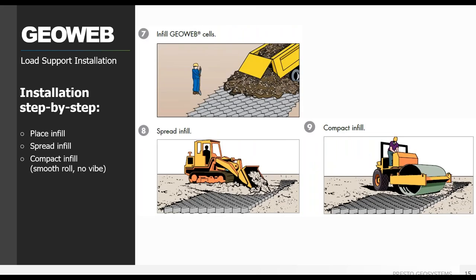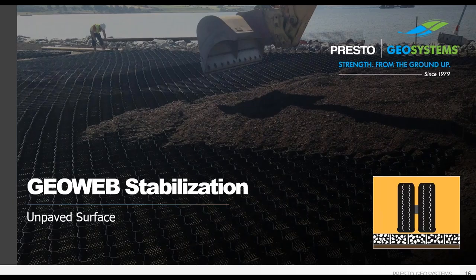The infill is placed, spread, and compacted with an appropriate wear surface. According to design, that could be an unpaved surface, a flexible pavement, or a rigid pavement atop the GeoWeb. Let's look at some examples from an unpaved load support system first. An aggregate surface has advantages in saving pavement costs, and with the GeoWeb system filled with open-graded base cores, you can design a system that allows stormwater infiltration and provides stormwater storage.